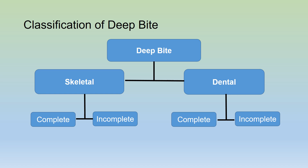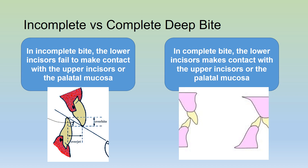Each of these can be either a complete deep bite or an incomplete deep bite. In an incomplete bite, the lower incisors will not touch the upper incisors or the palatal mucosa. Whereas in a complete bite, the lower incisor touches the upper incisors or the palatal mucosa.